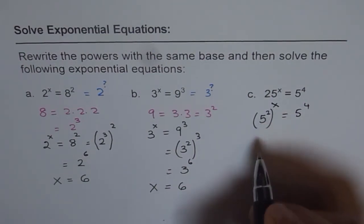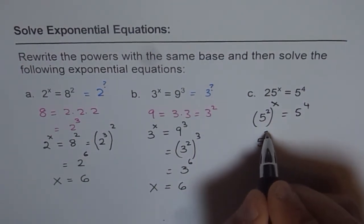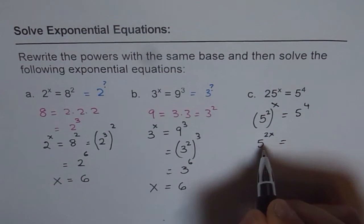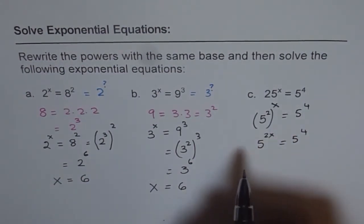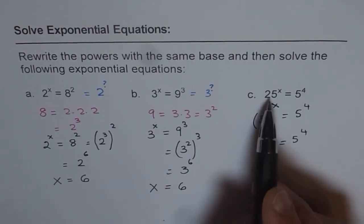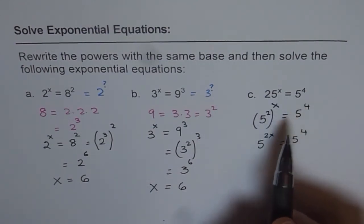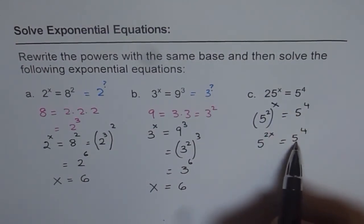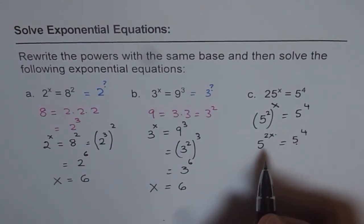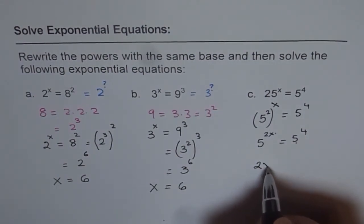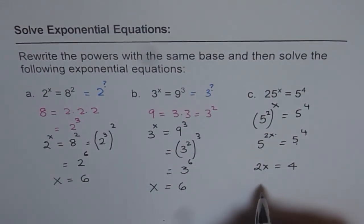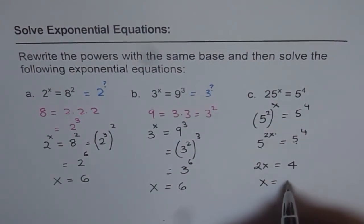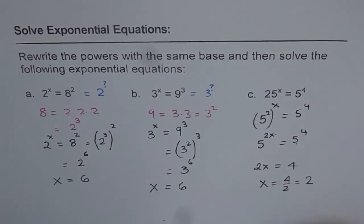When we apply the rules, it becomes 5 to the power of 2x on the left side and 5 to the power of 4 on the right side. We have rewritten our equation with the same base, so their exponents should be equal. Therefore, 2x equals to 4. Dividing both sides by 2, we get x equals to 4 divided by 2, that is 2.